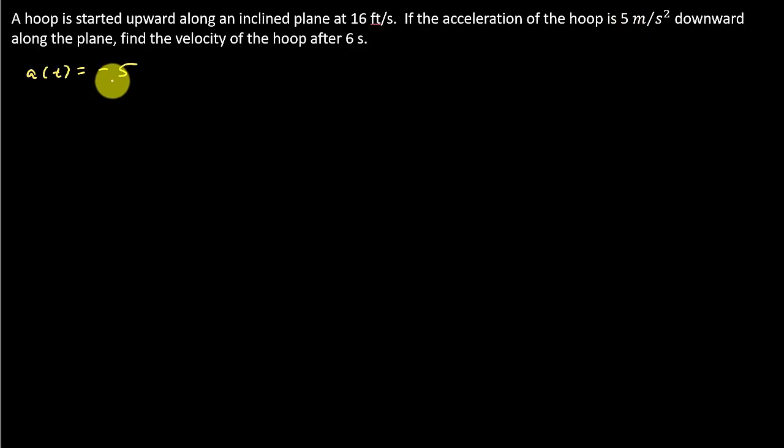And we also have a condition on it that v of 0 is equal to 16 feet per second. So this we get from here. It says a hoop is started upward along an inclined plane at 16 feet per second. And then if the acceleration of the hoop is 5 meters per second squared downward along the plane, so that's where we get this from.